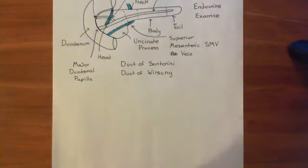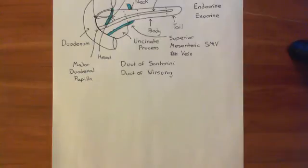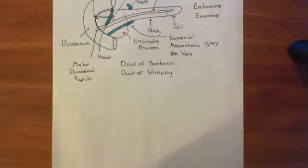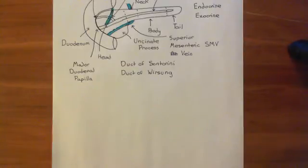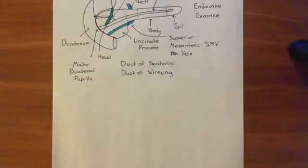Here we'll see both cells that are involved in exocrine secretion — i.e. they're secreting digestive enzymes that will move down the pancreatic ducts and be secreted into the lumen of the duodenum to help with digestion — and we'll also see the endocrine components of the pancreas, i.e. the cells which are secreting molecules into the bloodstream, which will have endocrine effects.